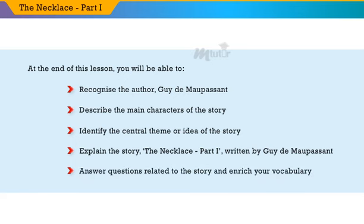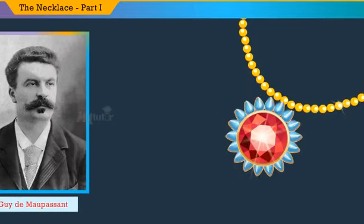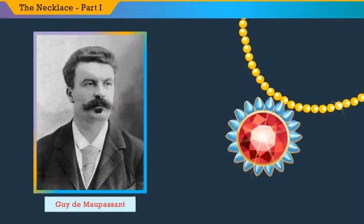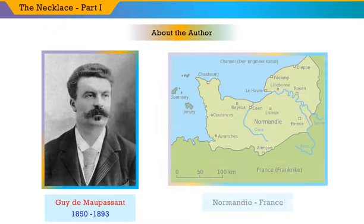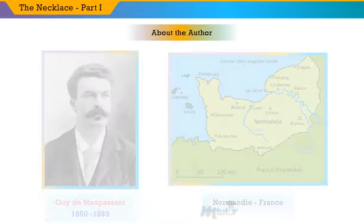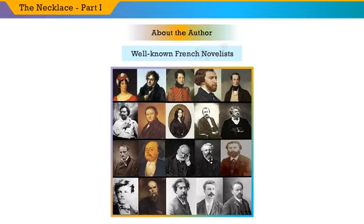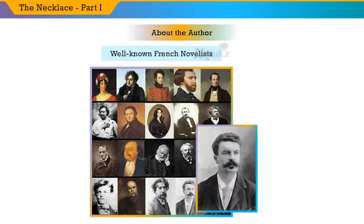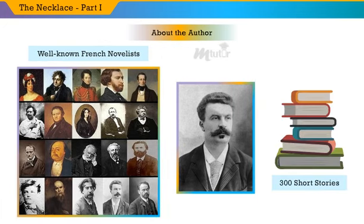You will also answer questions related to the story and enrich your vocabulary. 'The Necklace, Part 1' was written by Guy de Maupassant. Guy de Maupassant was born in Normandy, France in 1850. In the 19th century, he was considered as one of the most indispensable authors of French literature. Being a well-known French novelist, Guy de Maupassant was also regarded as one of the best writers of short stories.